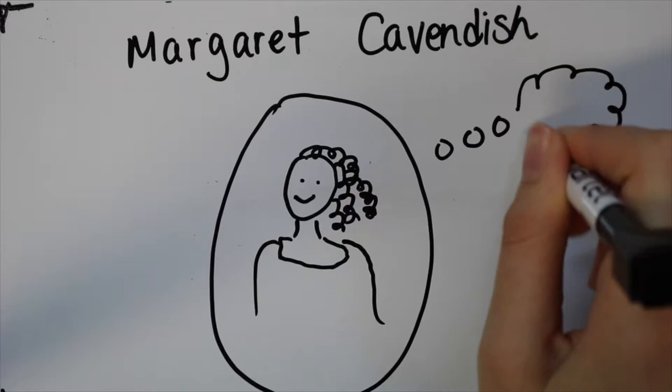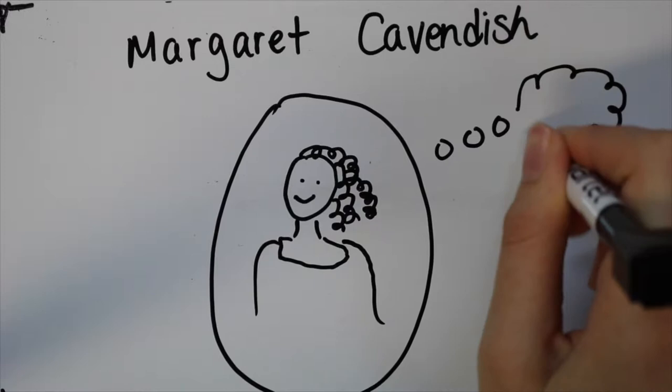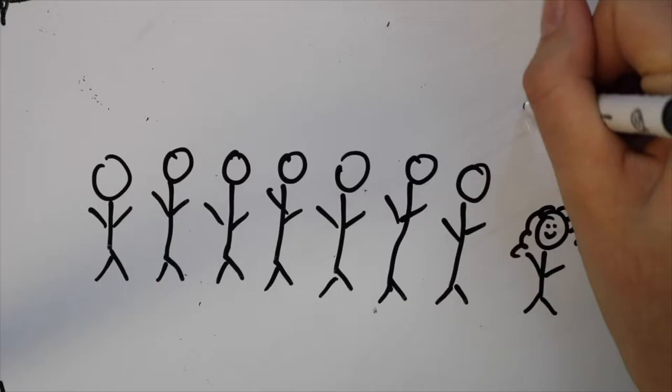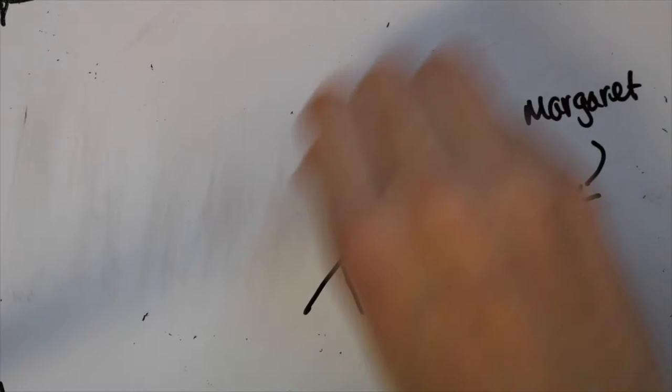Born Margaret Lucas in Colchester, England in the 1620s, records of her exact birth date were lost during the English Civil Wars. She was the youngest of eight children. Sadly, her father died when she was two, so Margaret was primarily raised by her mother.